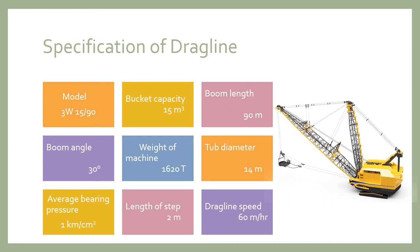Next is the specification of the dragline. The model number is 3W15-flat-90. The bucket type is 15 meter cube. A 90 meter boom length is used with a 30-degree boom angle. Machine weight is 1,620 tons. The tub diameter is 14 meters. Average bearing pressure is 1 kg per centimeter square, and a 2-meter step length is used. Drag line speed is 60 meters per minute.